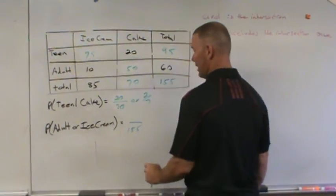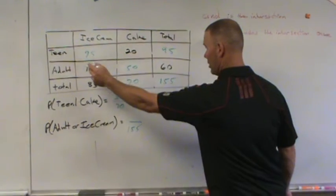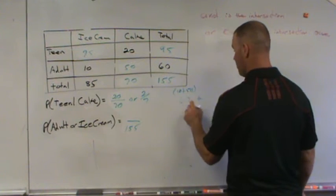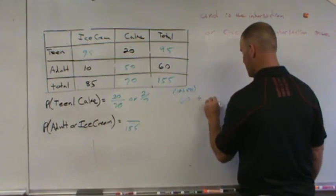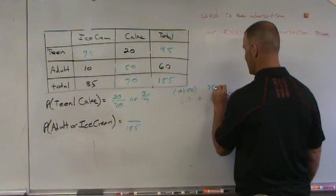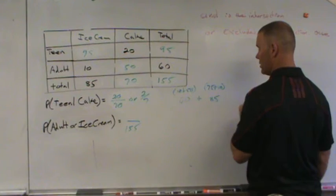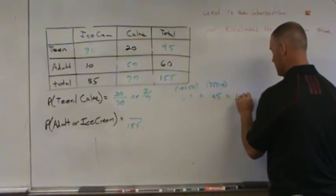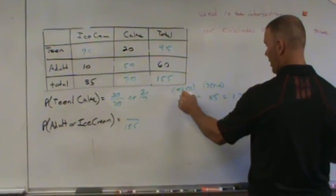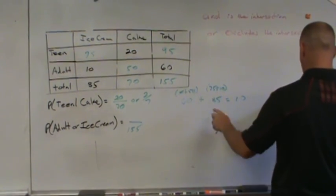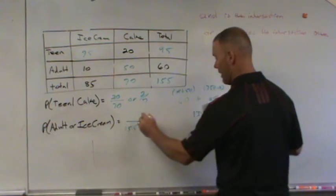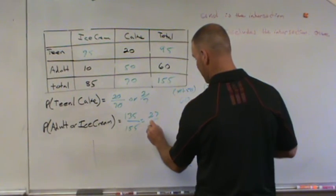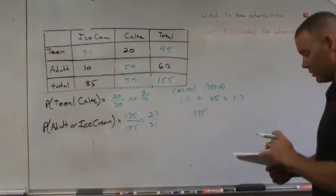But it doesn't say and, it says or. So how do we get that? I'm going to look at adults, which is 60. We got 10 plus 50. Plus, I need to add the ice cream, which is 85. And how did I get to 85? 75 plus 10. And I show these because you can see which number got counted twice. I have to take out what got counted twice, which is 10. So 60 plus 85, and you can take off one of these because it got counted twice. We get a total of 135. So 135, and we reduce by 5, over 27 over 31.